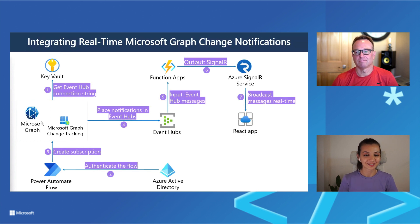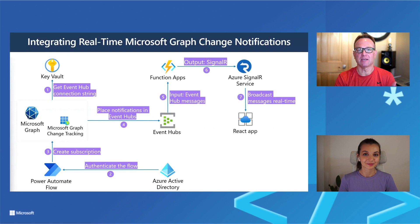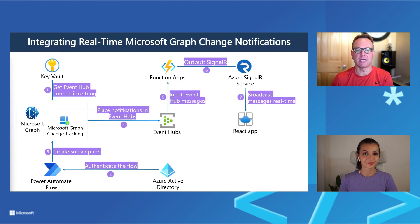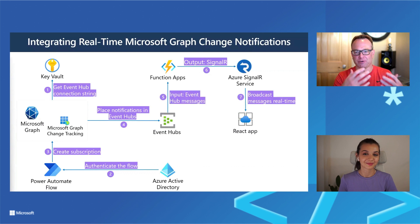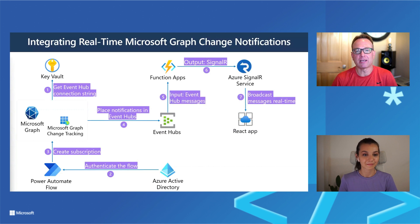What's great about this app is that we use the Fluid Framework for real-time data like brainstorm notes and typing, and we also use SignalR to get the real-time presence data. With Azure Functions and SignalR, there's very little code to write — a lot is built into how Azure Functions work with Event Hubs and how the output goes to SignalR. That'll carry us into the next videos.